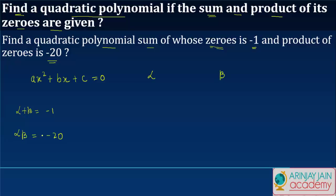But one thing that we know is that the sum of the two zeros is equal to minus b upon a, and also the product of the two zeros is equal to c upon a.